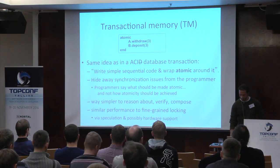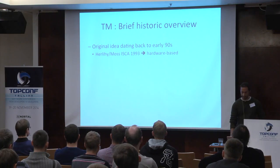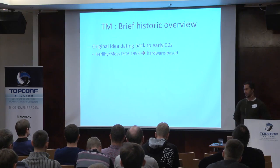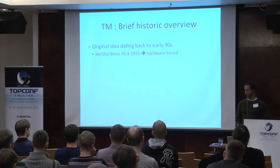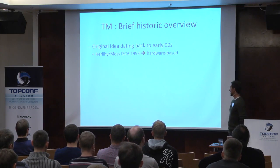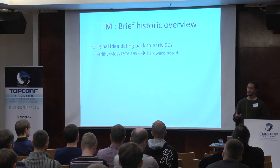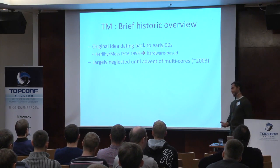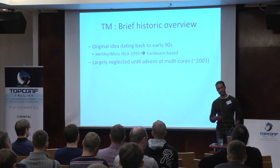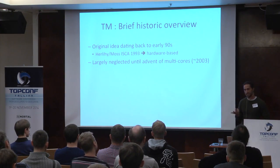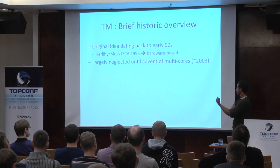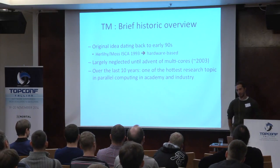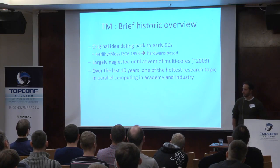When we talk about parallel computing we are also concerned about performance. The promise of transactional memory is to achieve performance very similar to fine-grained locking, using a mixture of speculation and possibly hardware support. A quick historic overview: transactional memory is not a new idea — it's more than 20 years old, proposed in a 1993 paper and originally conceived as a hardware-level implementation. But this idea came before its time; nobody cared about it for more than 10 years, until the multi-core era started around 2003. Since then it has been one of the hottest research topics in both academia and industry.